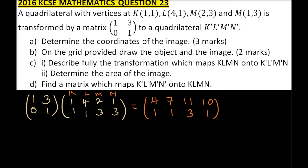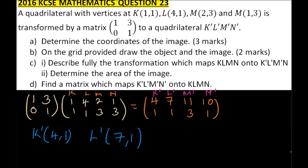So the resulting image matrix gives us K', L', M', and N'. The coordinates of the image are: K' is (4,1), L' is (7,1), M' is (11,3), and N' is (10,3).